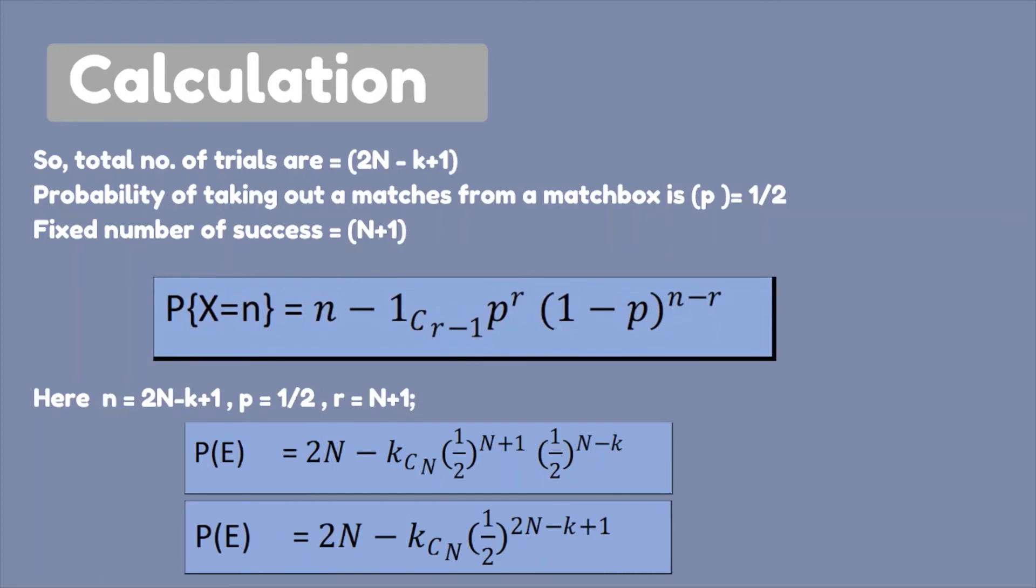In our case, n equals to 2N minus k plus 1 which is number of trials and p equals to half which is probability success and r equals to N plus 1 the fixed number of success.